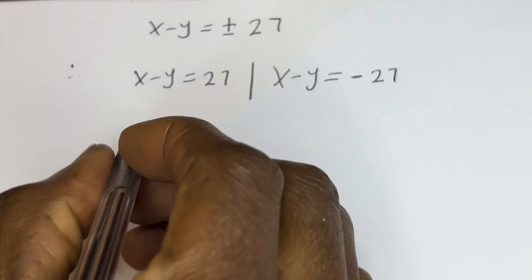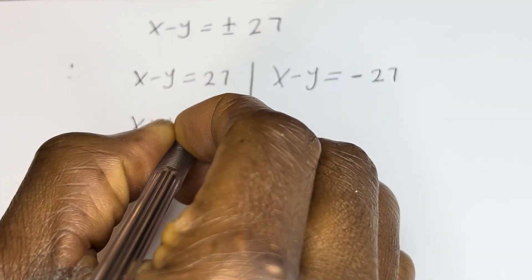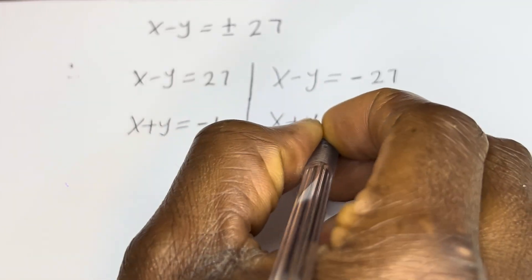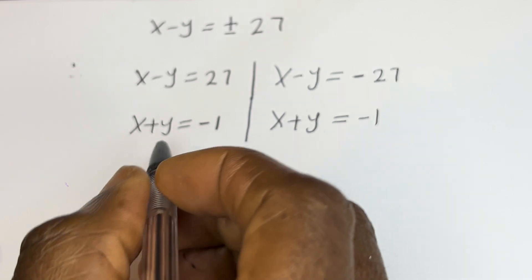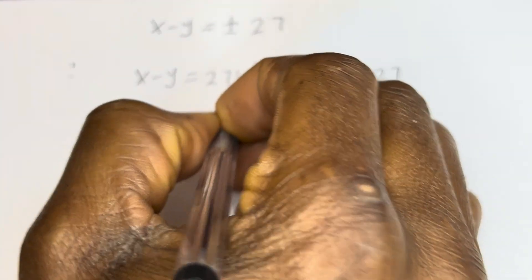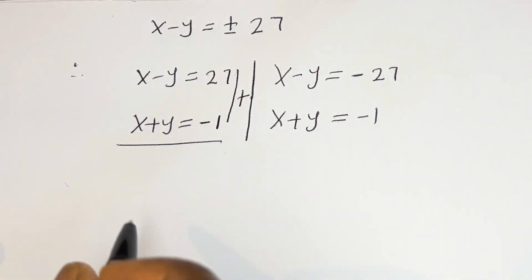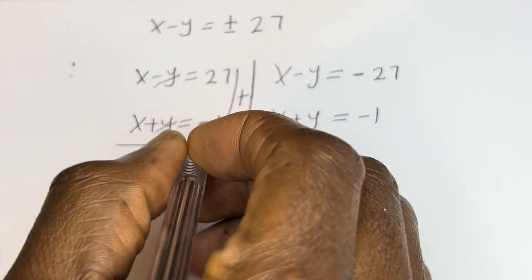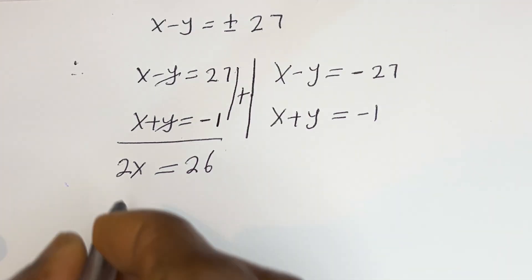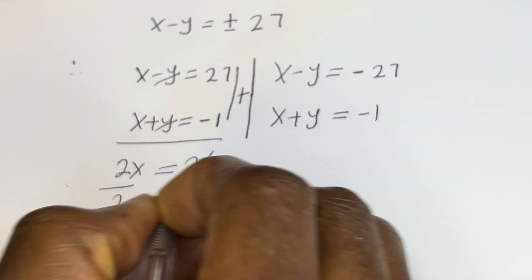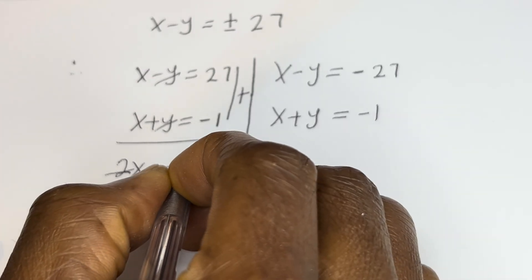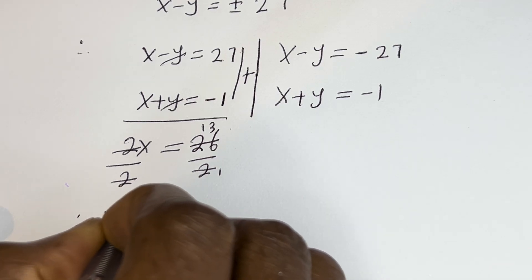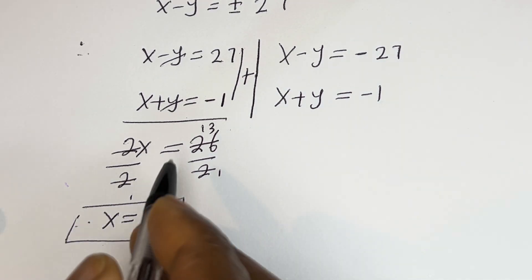From equation 3 we have s plus y is equal to minus 1. For the first case, we solve s minus y equals 27 and s plus y equals minus 1 simultaneously using the elimination method. Adding the two equations: 2s equals 27 minus 1, which is 26. Dividing both sides by 2, s is equal to 13.